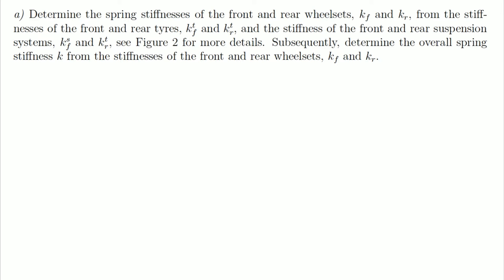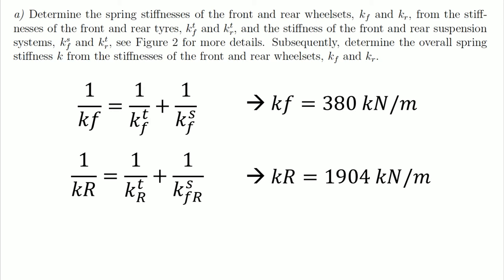Each wheel set can be treated as two springs in series. To calculate the equivalent K, we use this equation, where KF is the equivalent K of the front wheel set, KTF is the spring stiffness of front set of tires, and KSF is the spring stiffness of front suspension system. We use the same equation for the rear wheel set. To calculate the total K of the system, we just add the front K and rear K.